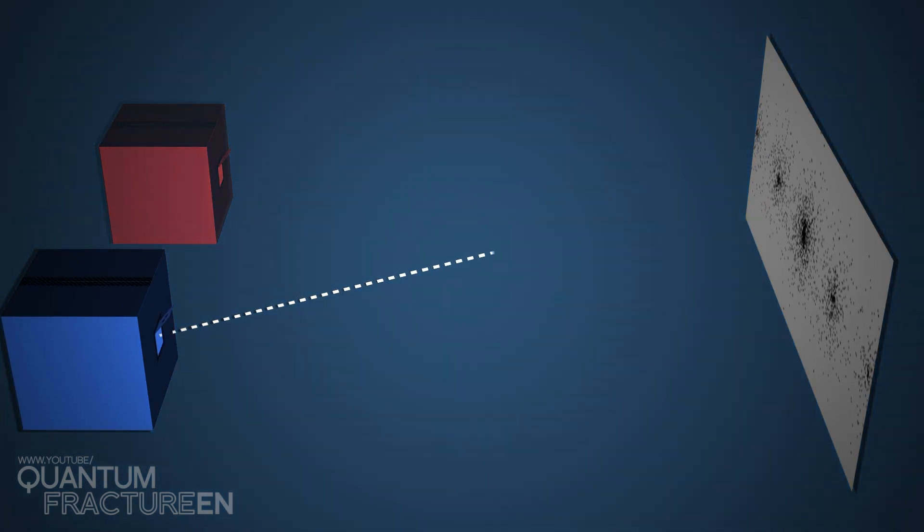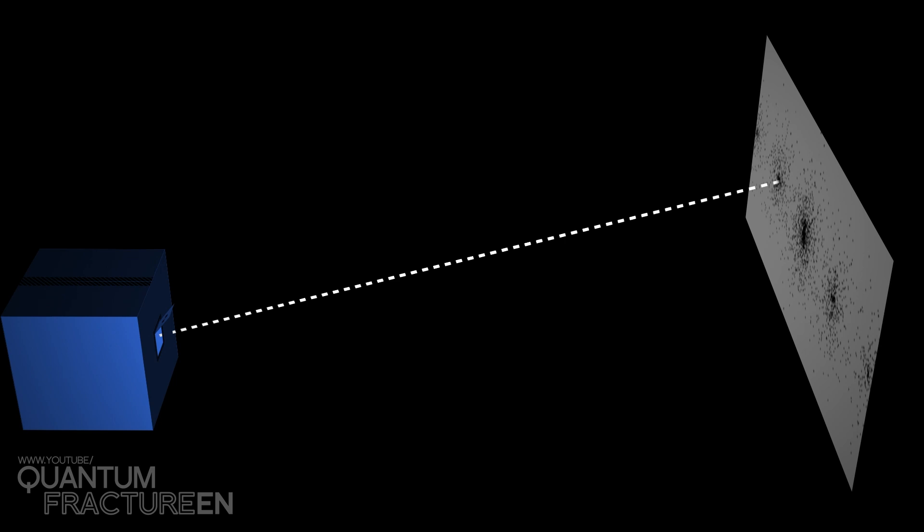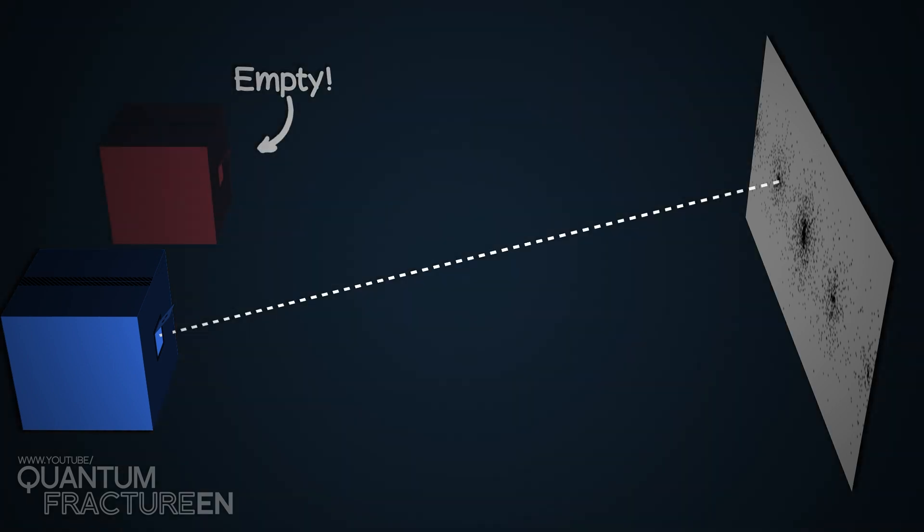If the atom leaves one box, it can't carry any information from the other box. It can't be affected by it because it's an empty box that plays absolutely no part in this shot. And yet, the information reaches the screen.